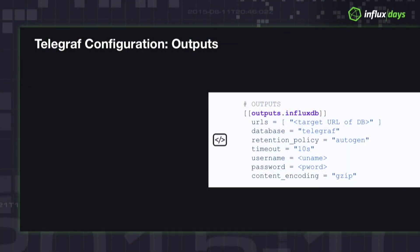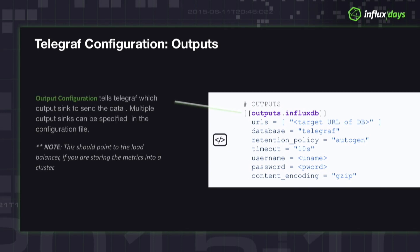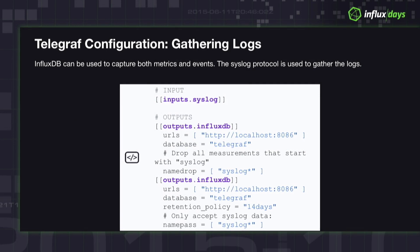On the output side, of course we need to send this somewhere. We send it to an InfluxDB instance — that's the easiest thing to configure. We send it to the target URL of the database. If it's an open source instance, great; if not, use two enterprise instances to monitor each other, just making sure the URL points to the load balancer in front of the cluster. Also, content encoding gzip — definitely recommend turning that on to compress the metrics as you're sending them across.